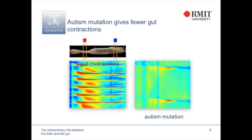This is a mutation we thought only affected the brain, but it's actually affecting the gut as well — remember, it's separated from the central nervous system. So maybe this is telling us something about autism patients and why they might have gastrointestinal problems in some cases.